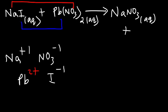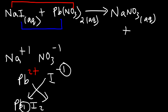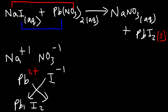Iodide has a minus one charge. Using the crisscross method, it's going to be PbI2 — take the numbers and replace them with subscripts, giving us lead two iodide. Now, is this compound soluble or insoluble? According to the solubility rules, halides like chlorides, bromides, and iodides are insoluble with compounds such as silver, lead, and mercury. Everything else they're soluble with. So because this compound is insoluble, we put S because it's going to form a solid.